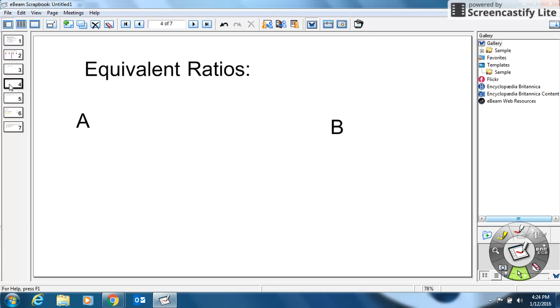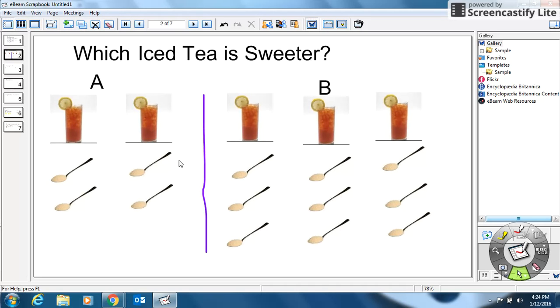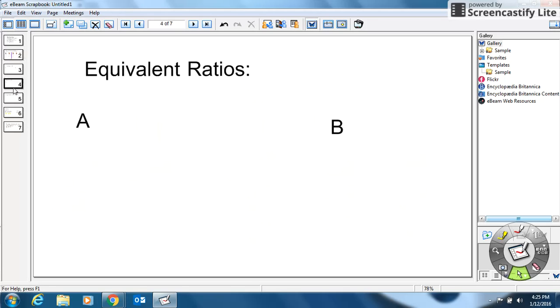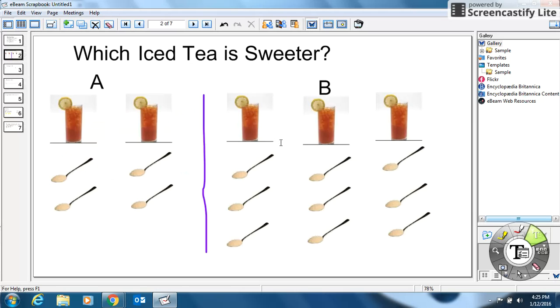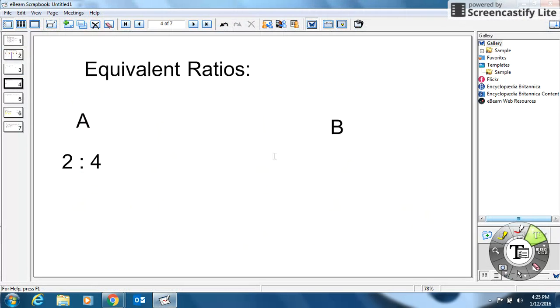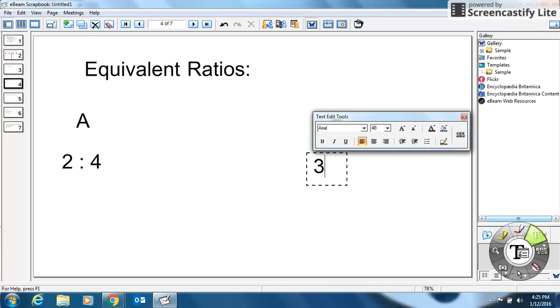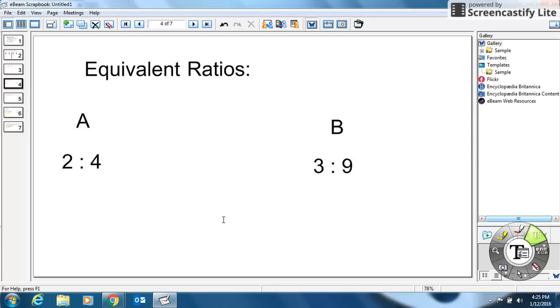Let's go and look at another example. Equivalent ratios. So what we can do here is let's go and figure out what's our actual ratio here. Our ratio, for example A, is two glasses of water for every four tablespoons of sugar. So let's go type that in. Over here, we could say the ratio is two glasses of water for every four tablespoons. Let's go figure out what our ratio for B is. Over here it would be three glasses of water for every nine tablespoons.